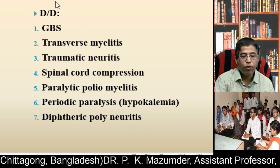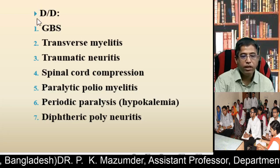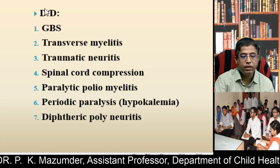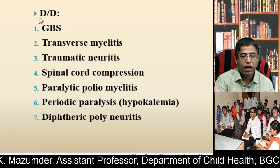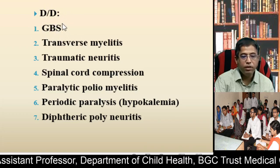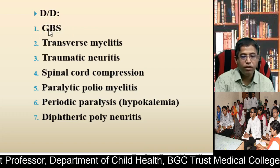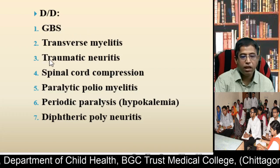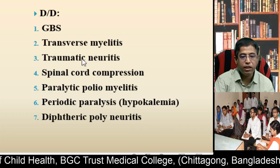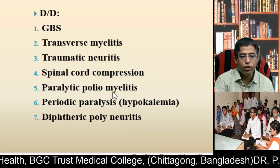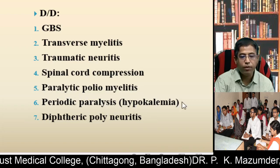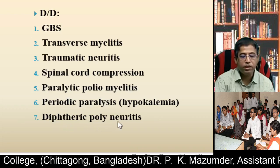What are the differential diagnoses? Very important — usually given in written examinations and sometimes asked in Viva board. The most important is GBS, meaning Guillain-Barré syndrome; second is transverse myelitis; third is traumatic neuritis; fourth is spinal cord compression; fifth is paralytic poliomyelitis; sixth is periodic paralysis due to hypokalemia; and seventh is diphtheric polyneuritis.